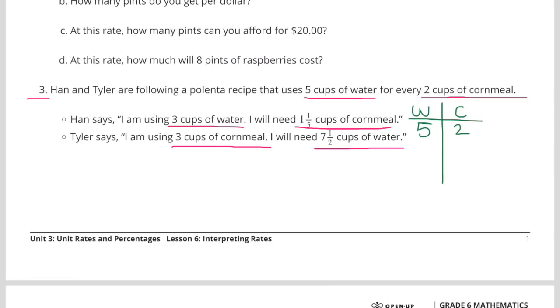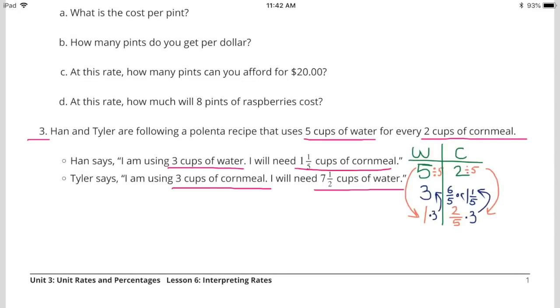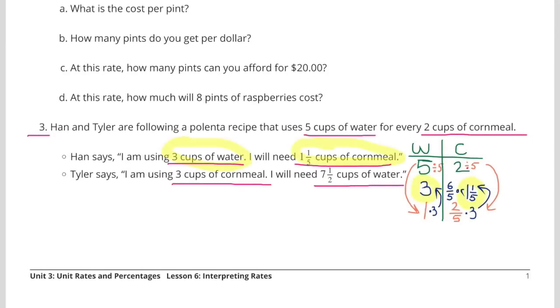I made a chart with water on the left and cups of cornmeal on the right. 5 cups of water for every 2 cups of cornmeal. 5 divided by 5 to get 1 cup of water, and 2 divided by 5 to get 2 fifths of a cup of cornmeal. So every 1 cup of water, they would need 2 fifths of a cup of cornmeal. Now that we know how much cornmeal we need for 1 cup of water, we can multiply that 1 cup of water times 3 to make 3 cups of water for Han. When we multiply 1 cup of water times 3, we'll also have to multiply 2 fifths times 3, which would give them 6 fifths or 1 and 1 fifth cup of cornmeal. Exactly what Han said he would need.